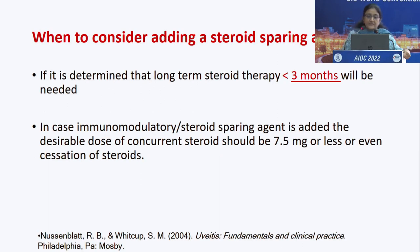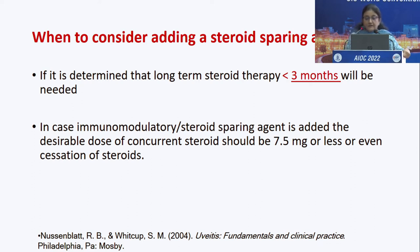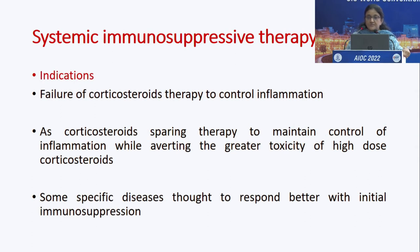When to consider adding a steroid-sparing agent: when there is no response, or when the patient requires long-term steroid therapy for more than 3 months. Then we think of immunomodulatory or steroid-sparing drugs. Systemic immunosuppressive therapy is used when corticosteroid therapy fails to control inflammation, and as corticosteroid-sparing therapy to maintain control while averting toxicity of high-dose corticosteroids.